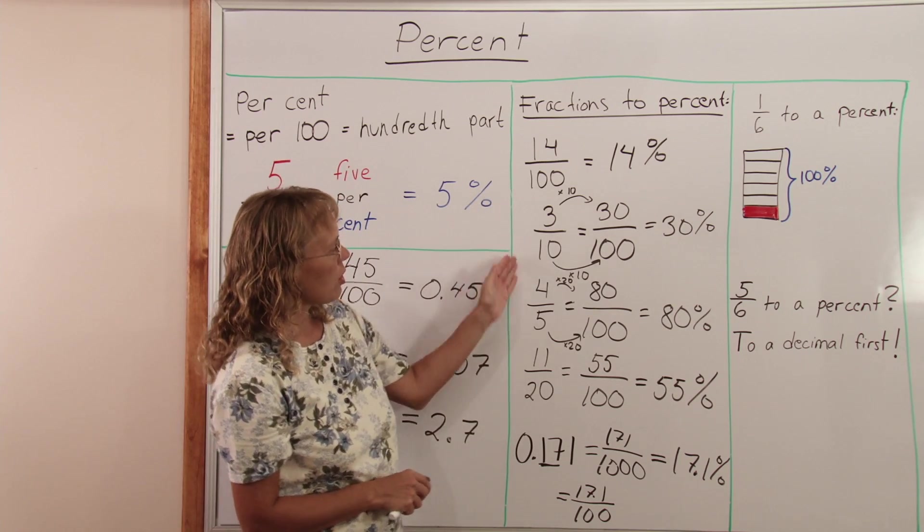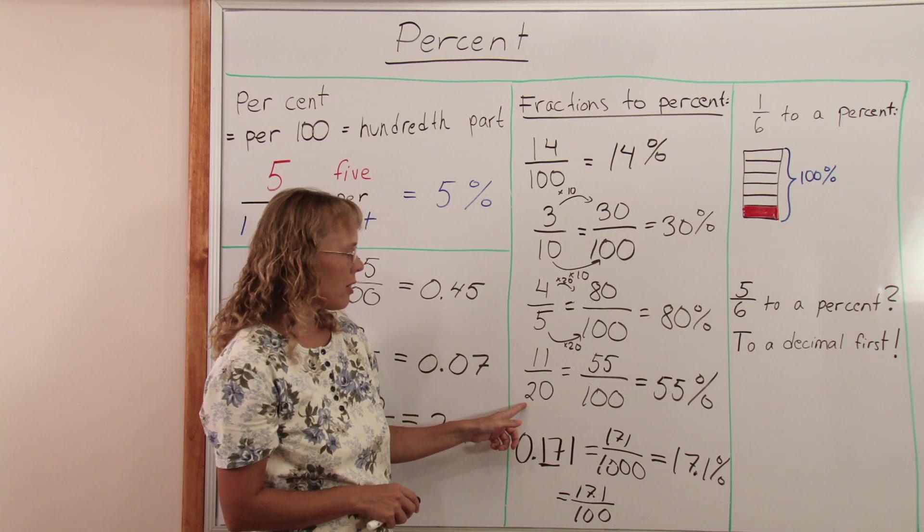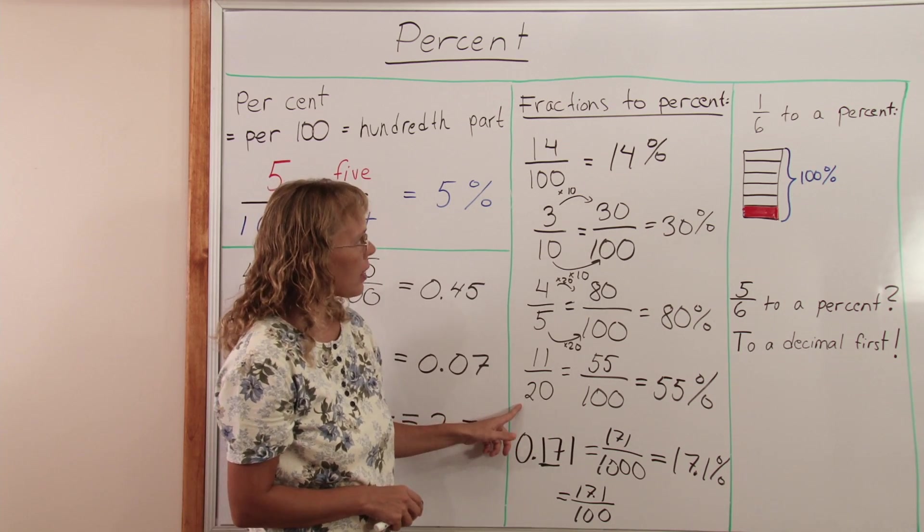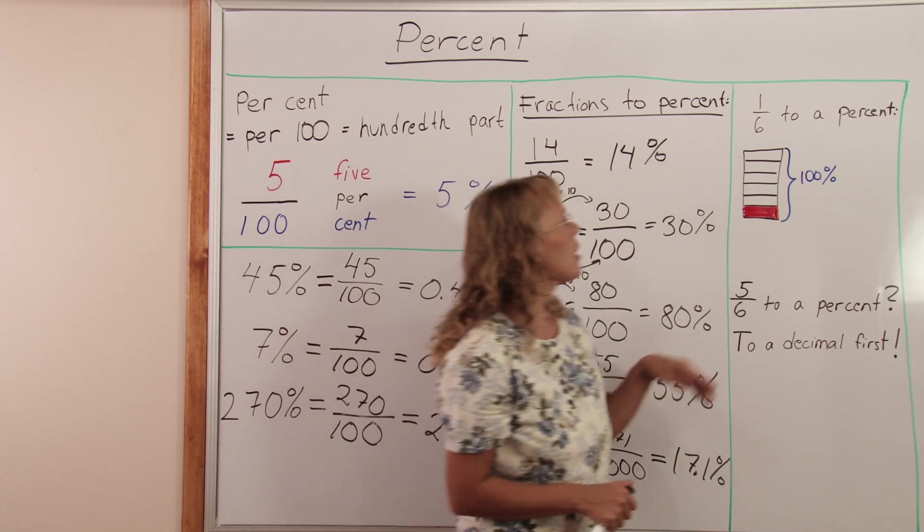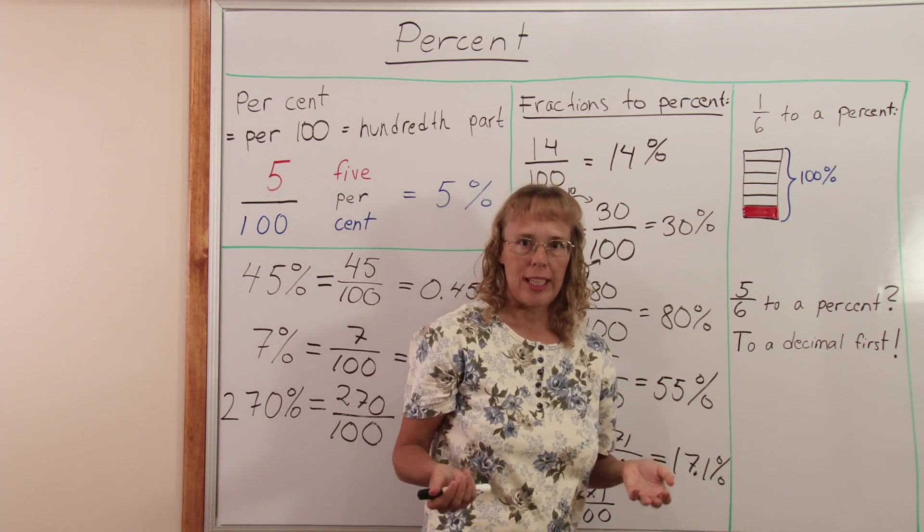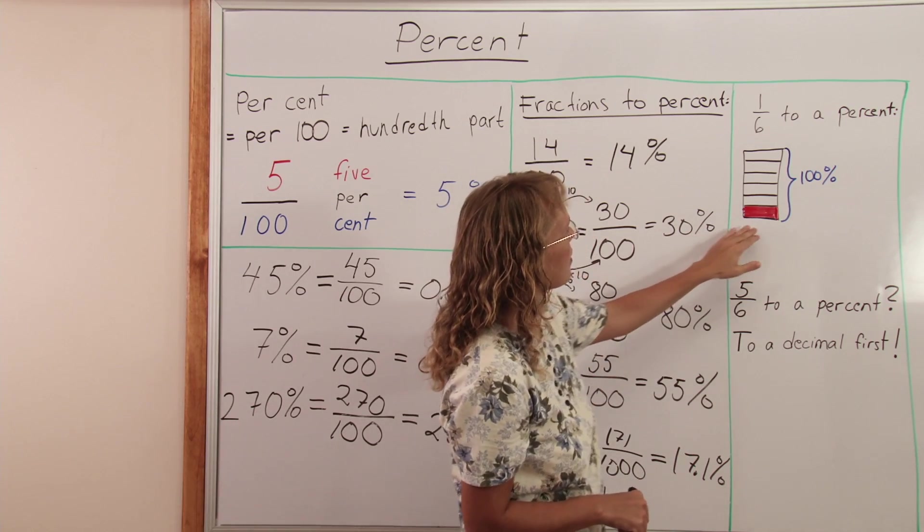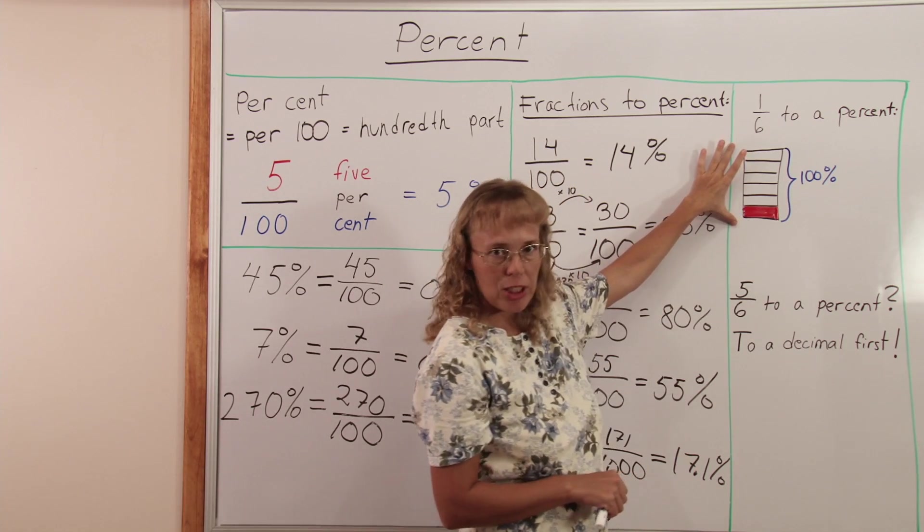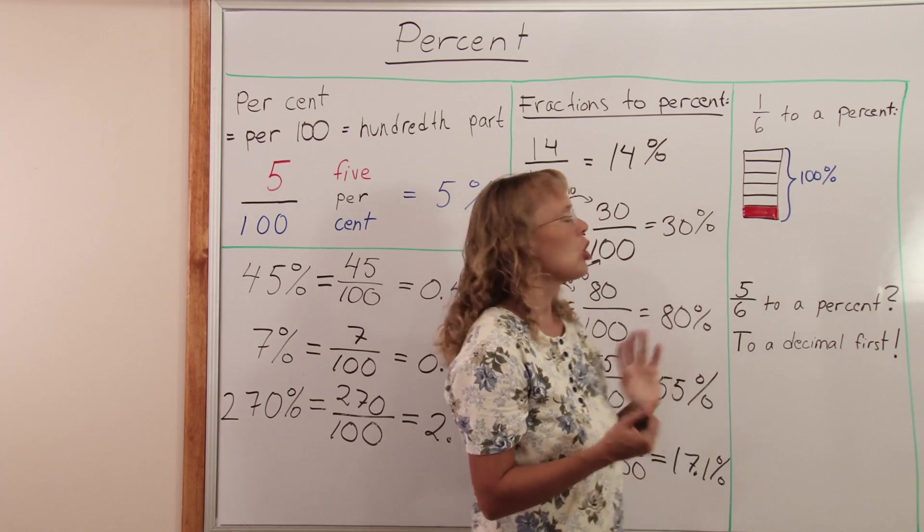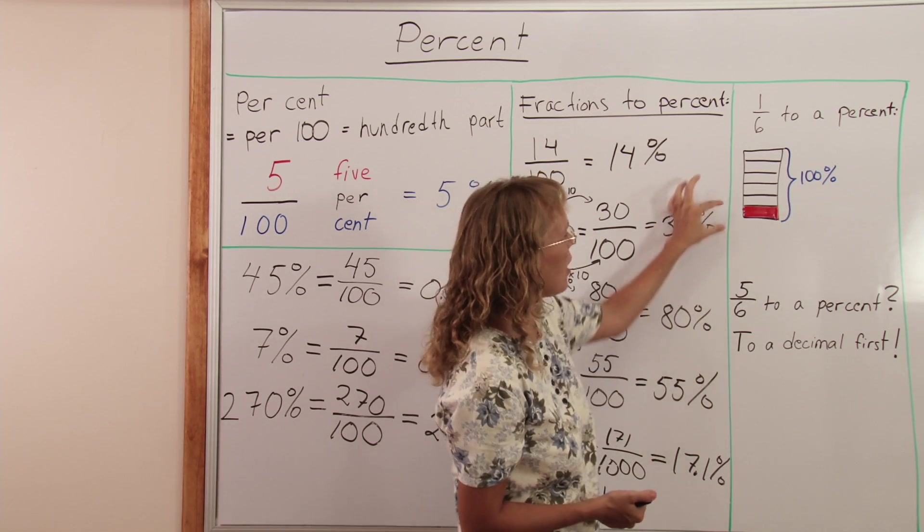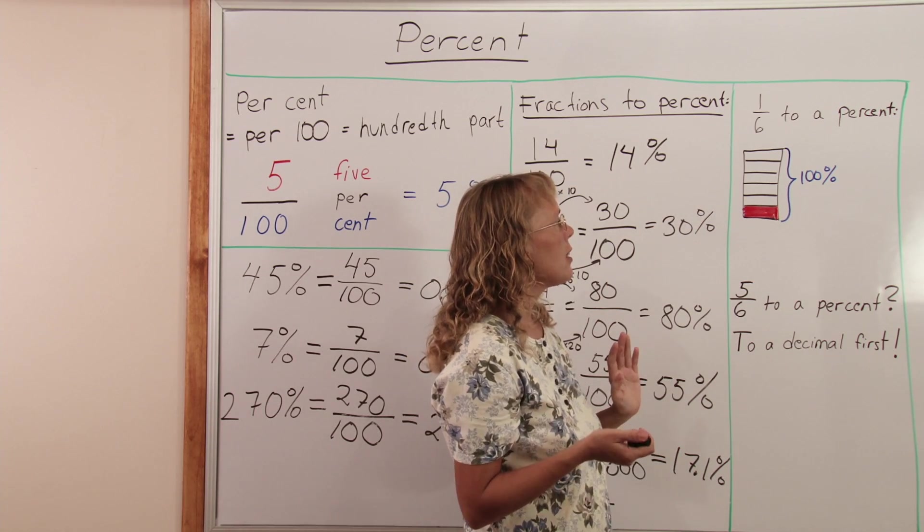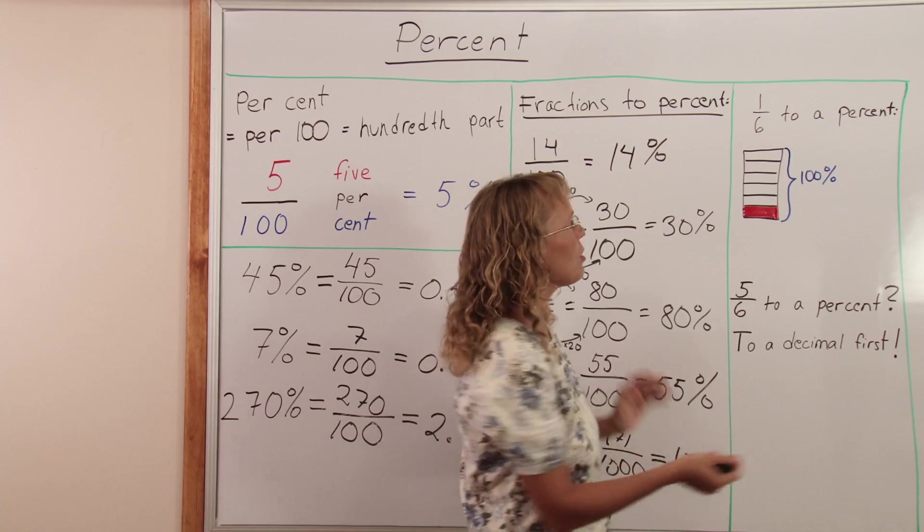Now these fractions all were really nice because their denominators went into the 100 evenly. But of course we have lots of fractions that don't do that. For example 1 sixth here. So how do we change that to a percent? Here's 1 sixth as a picture. I wrote here that if this whole thing was 100 percent, the total 100 percent, then how many percent is this one here? 1 sixth.